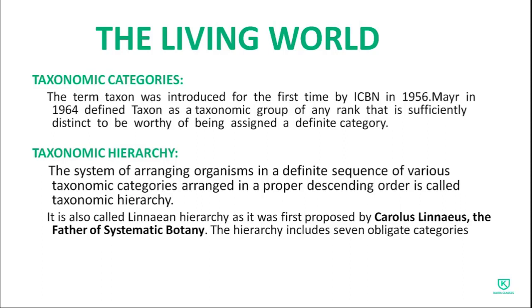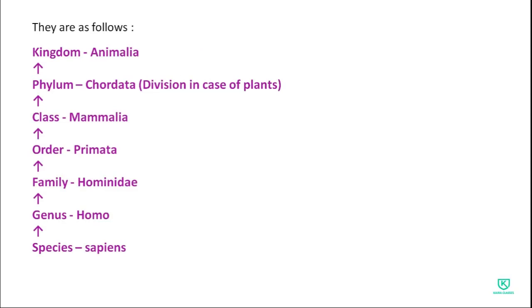The hierarchy includes seven obligate categories. In descending order: Kingdom, Phylum, Class, Order, Family, Genus, Species. Or in ascending order from the lowest: Species, Genus, Family, Order, Class, Phylum, Kingdom.